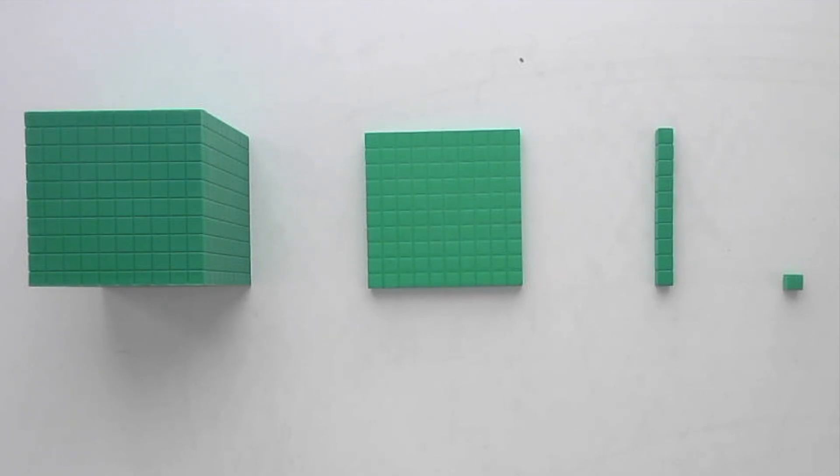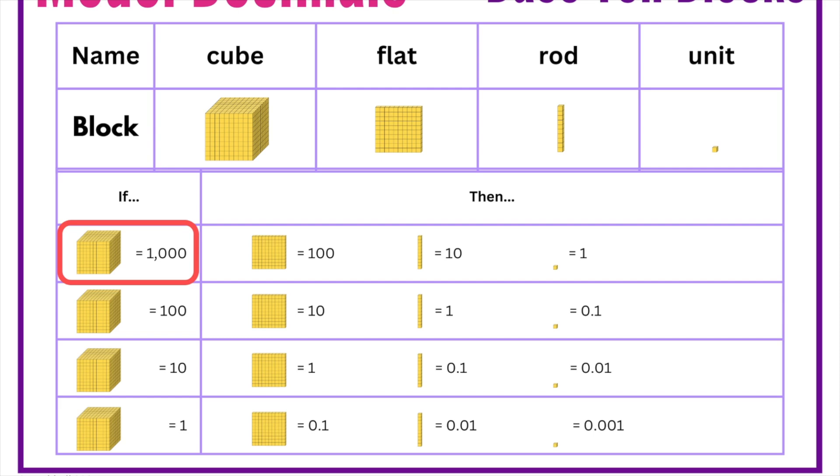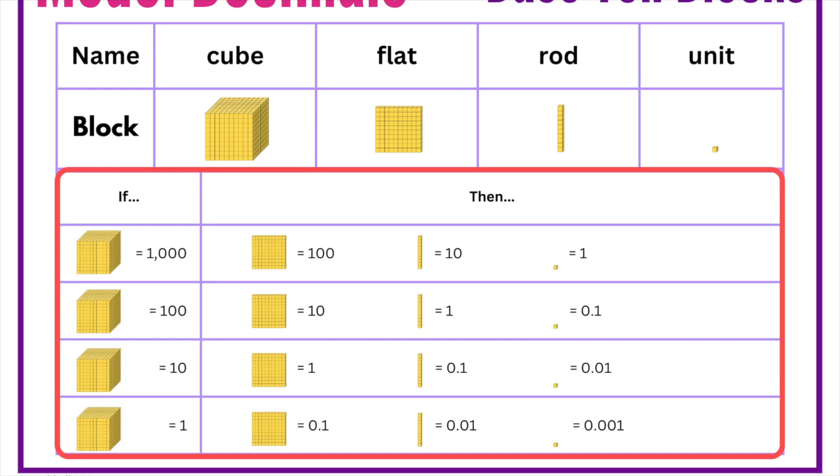That means, depending on where you start or what number you want to model, the same block can represent different values. For example, a large cube could represent 1000 or 100 or even 10. A flat might represent 100 or 10 or even just one whole. And a rod could represent 10, 1, or one tenth depending on what role you assign it. This flexibility is what makes base 10 blocks so powerful for modeling decimals.